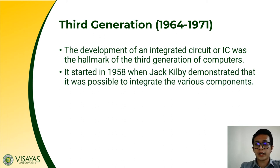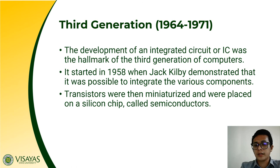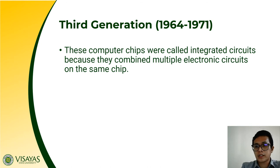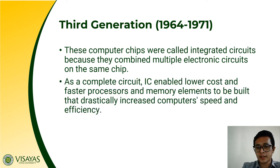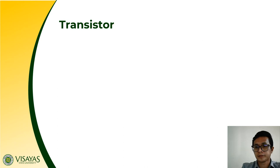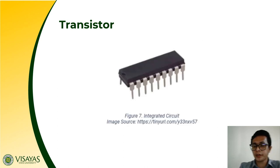It started in the year 1958 when Jack Kilby demonstrated that it was possible to integrate the various components. In this generation, transistors were still used, but they were miniaturized and replaced by a single silicon chip known as semiconductors. These computer chips — called integrated circuits — combined multiple electronic circuits on the same chip. The integrated circuit enabled lower-cost and faster processors and memory elements, drastically increasing computer speed and efficiency. Inside the integrated circuit are your transistors, which are miniaturized.